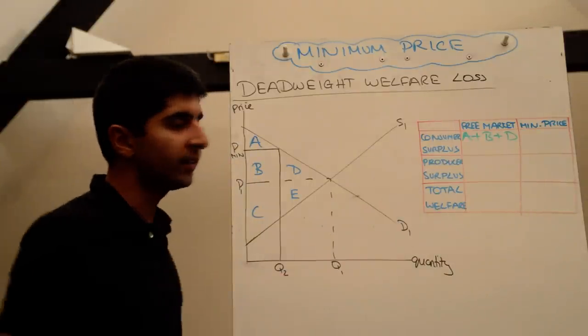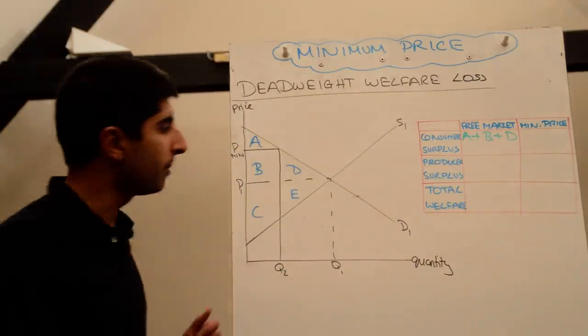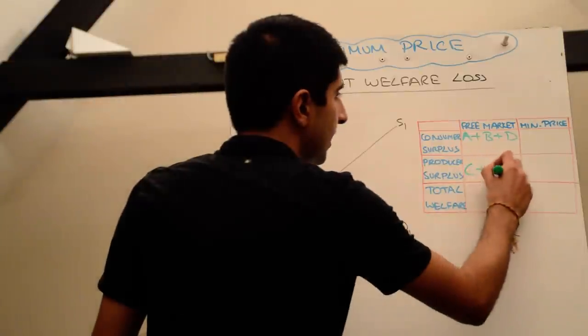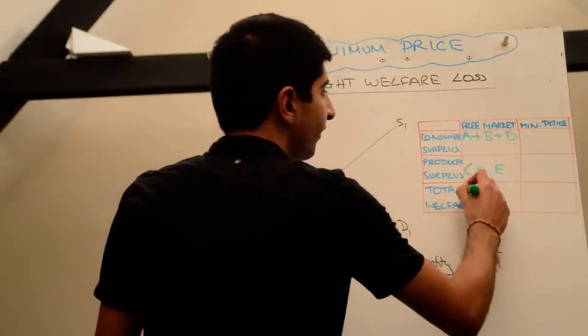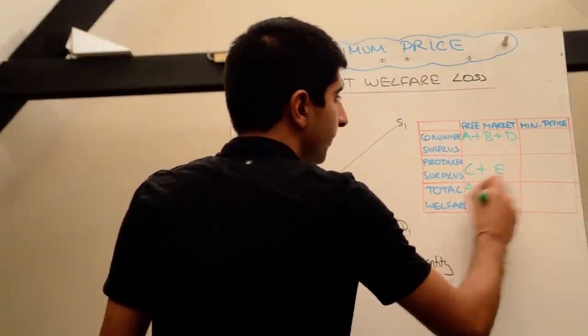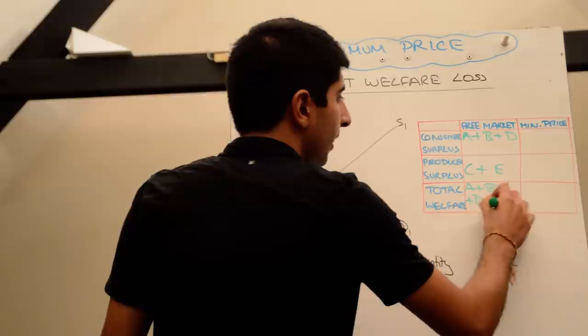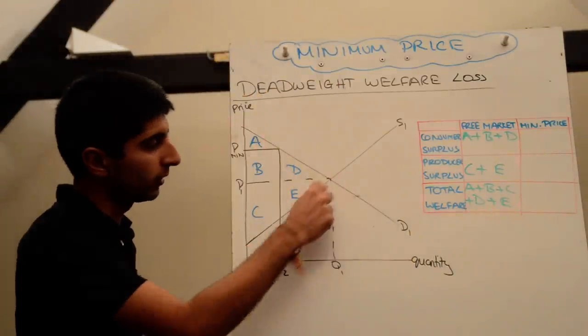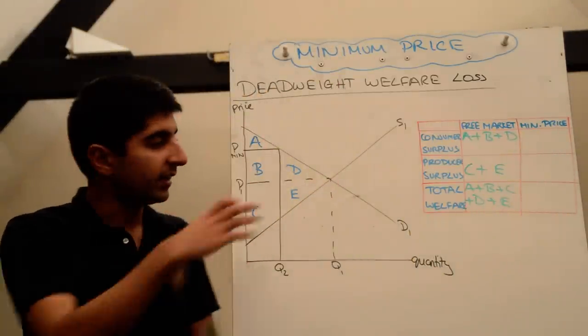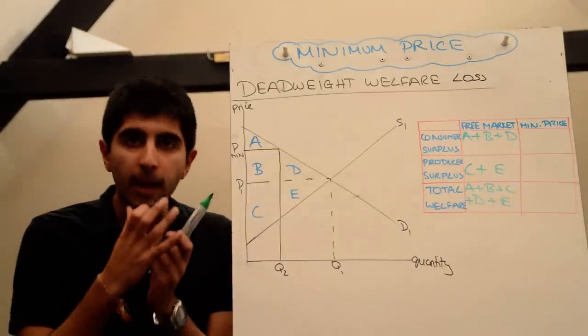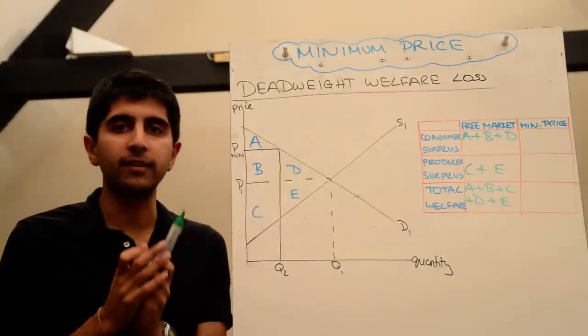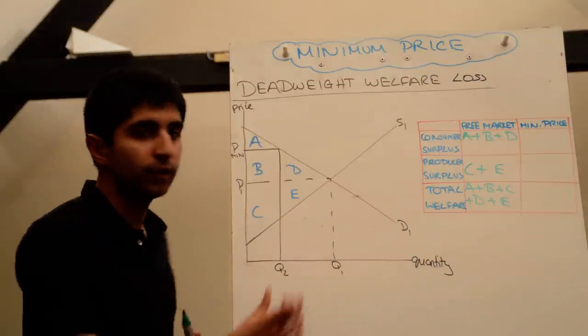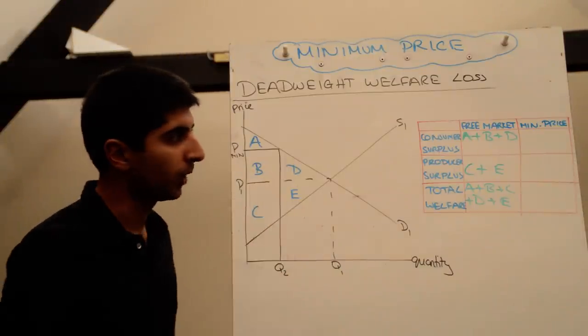The producer surplus was the area below the price but above the supply curve which was C plus E which meant total welfare is equal to A plus B plus C plus D plus E. So this total triangle here. The entire space inside represented welfare, maximizing welfare to society with efficient resource allocation at P1 and Q1.